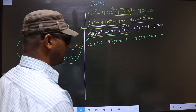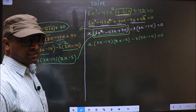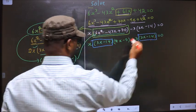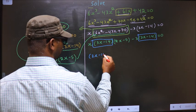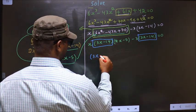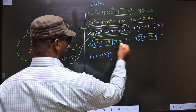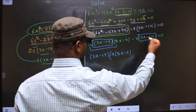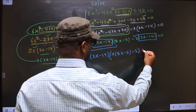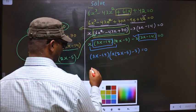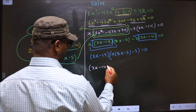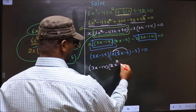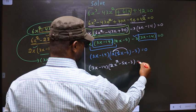From this entire equation, what can be taken out common is 3x minus 14. So 3x minus 14 outside. Over here you will be left with x times (2x minus 5) and here you will be left with minus 3, equal to 0. Then opening up the bracket, you get 2x² minus 5x minus 3, equal to 0.